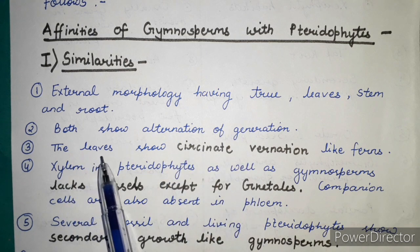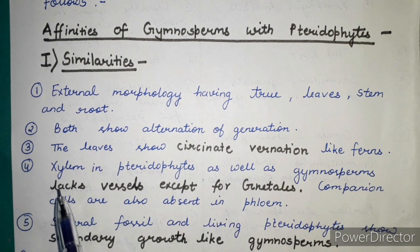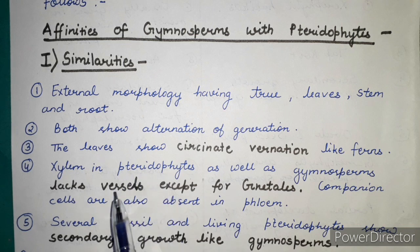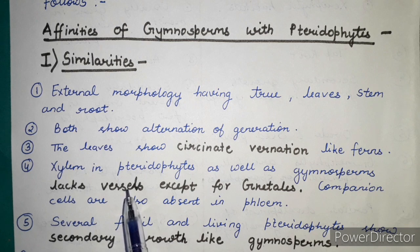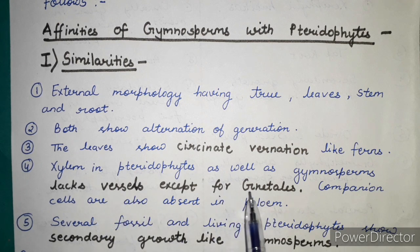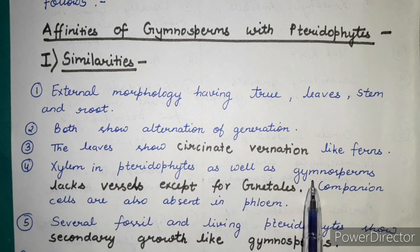Circinate vernation is found in the leaves of both groups. Regarding xylem, vessels are absent in pteridophytes as well as gymnosperms — with an exceptional case where vessels are present in Equisetales. In the case of phloem, companion cells are absent in both pteridophytes and gymnosperms.